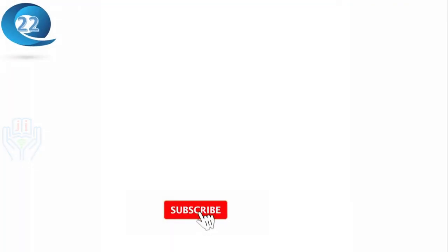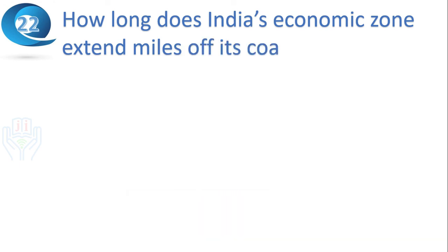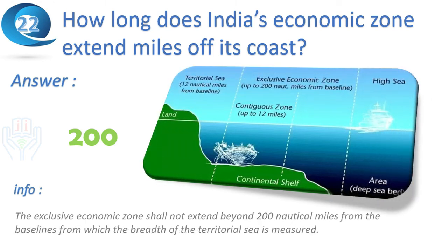Next question: how far does India's exclusive economic zone extend off its coast? Answer: 200 miles. The exclusive economic zone shall not extend beyond 200 nautical miles from the baselines from which the breadth of the territorial sea is measured.